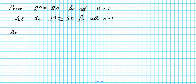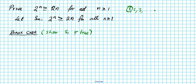Now let's start with the base case of our proof by mathematical induction. For the base case, we just have to show that S1 is true. Why do we start from S1? Well, n greater than or equal to 1 is the set of all integers 1, 2, 3, and so on, so the base or foundation is n equals 1. So S1 is the statement 2 to the 1 greater than or equal to 2 times 1. We have 2 is equal to 2, so this statement is true. So S1, the base case, is true.